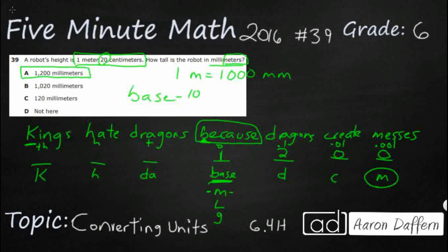We need to know that one centimeter equals 10 millimeters. So we just need to take that 10 and multiply it by 20 because we have 20 centimeters. And there's your 200. So that means 20 centimeters equals 200 millimeters. And add the 1,000 and the 200 and you get your 1,200.